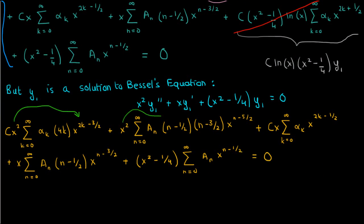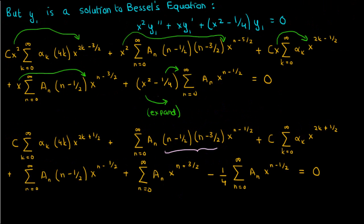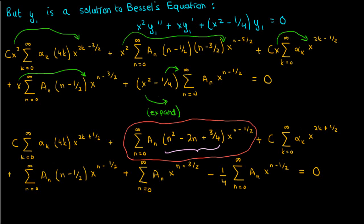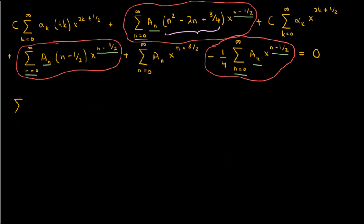Moving x squared and x back inside the summation and expanding the x squared minus 1/4 term, then expanding the n minus 1/2 times n minus 3/2 factor to get n squared minus 2n plus 3/4, we notice that the second, fourth, and sixth terms all start at n equals 0, have the same power on x, and all contain capital A sub n. Combining them gives the sum from n equals 0 to infinity of A sub n times n times n minus 1 times x to the power n minus 1/2.